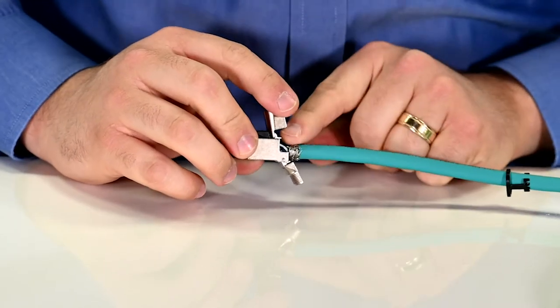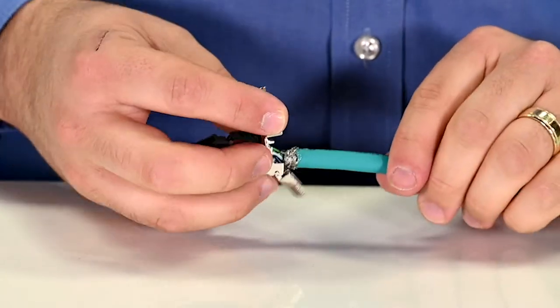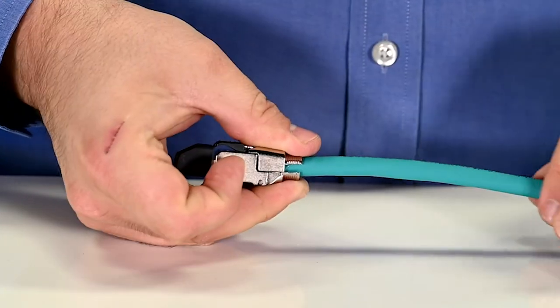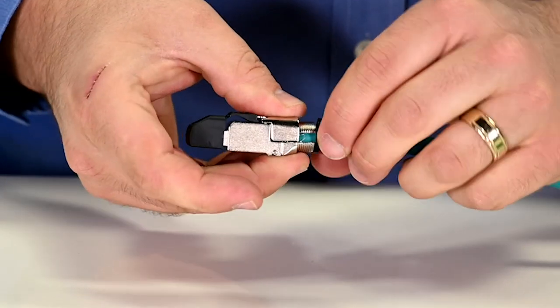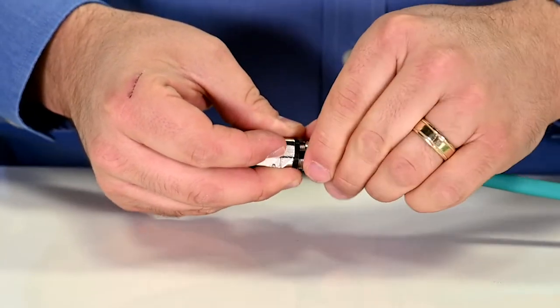So now we have our connector. We have our shield here that we need to terminate using this integrated shield clamp. And so we're just going to close up our housing, install our strain relief that we put on the cable earlier, and then tighten down that nut.